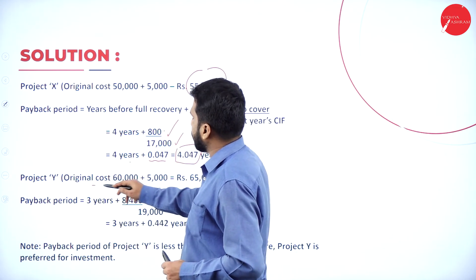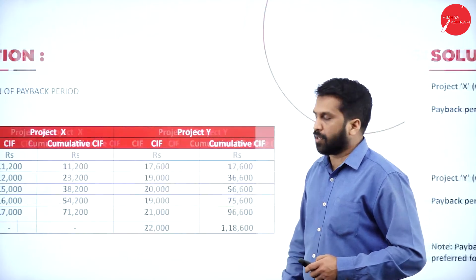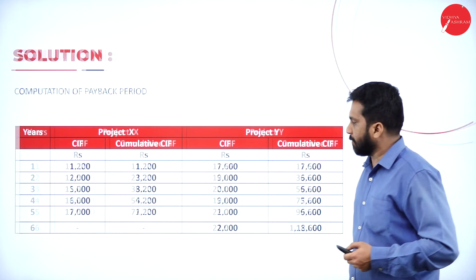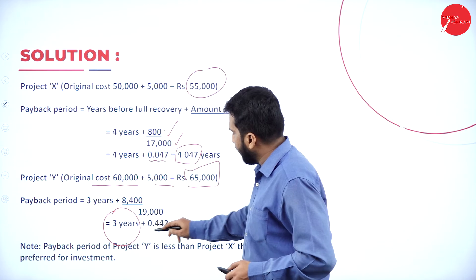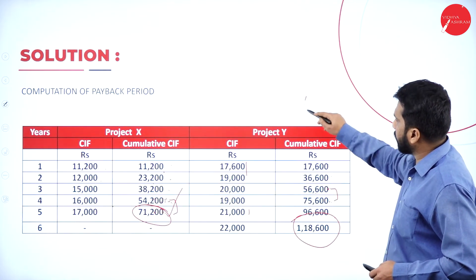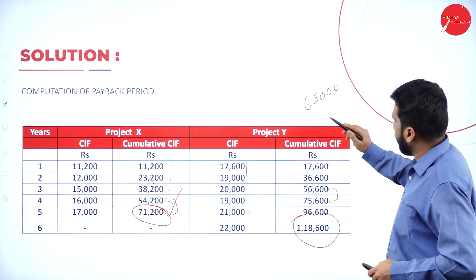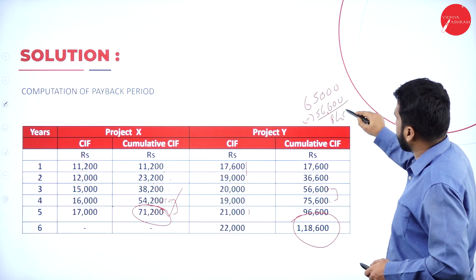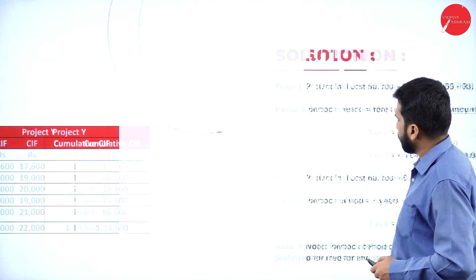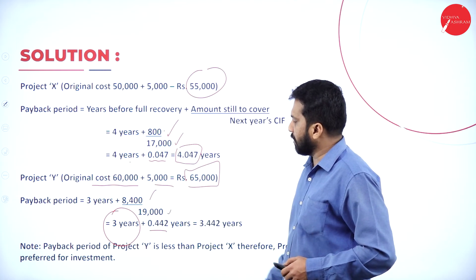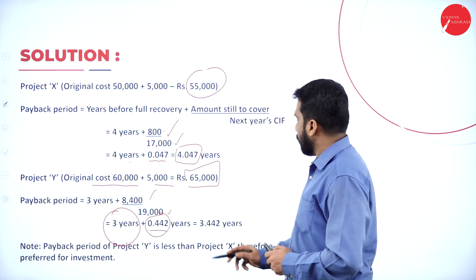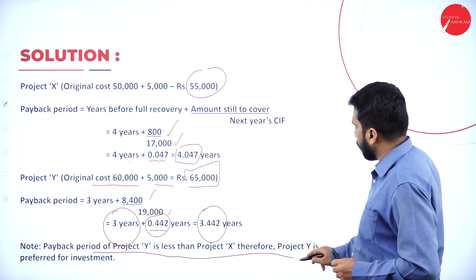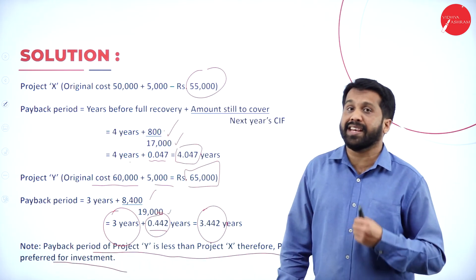For project Y, investment is 65,000. Cumulative cash inflow by year 3 is 56,600. We still need 65,000 − 56,600 = 8,400 more. The difference between year 3 and year 4 is 19,000. So payback period = 3 + (8,400 ÷ 19,000) = 3 + 0.442 = 3.442 years. Since the payback period of project Y (3.442) is less than project X (4.047), project Y is preferred for investment.